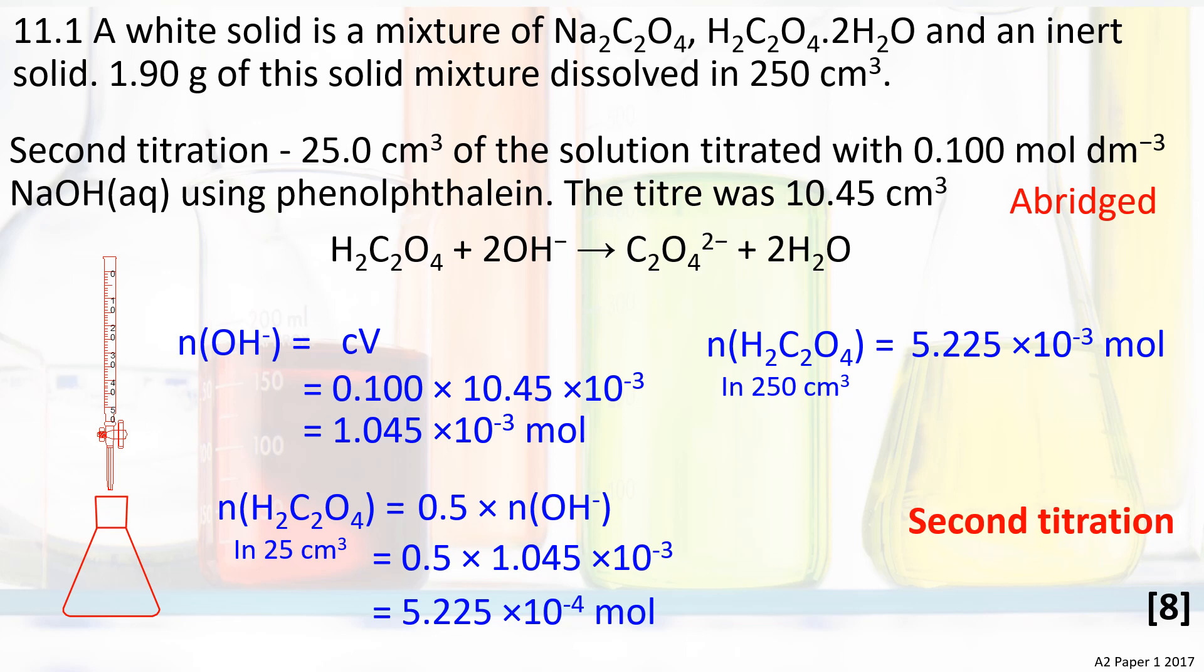It's a 1 to 2 reaction, so divide by 2 to work out the amount of ethane dioic acid: 5.225 × 10⁻⁴ moles. This is the amount of ethane dioic acid in 25 cm³, so multiply by 10 to find the amount in the original 250 cm³ solution. This works out to be 5.225 × 10⁻³ moles.